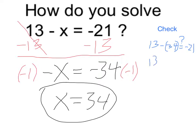13 minus 34 is the same thing as 13 plus negative 34. And we want to see if that's the same as negative 21. Now when I'm adding a positive and negative, I'm going to subtract, and I take the sign of the larger absolute value.